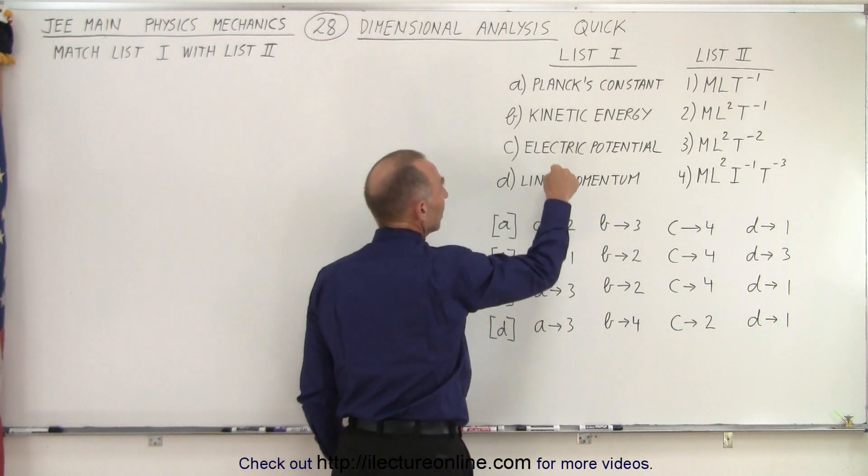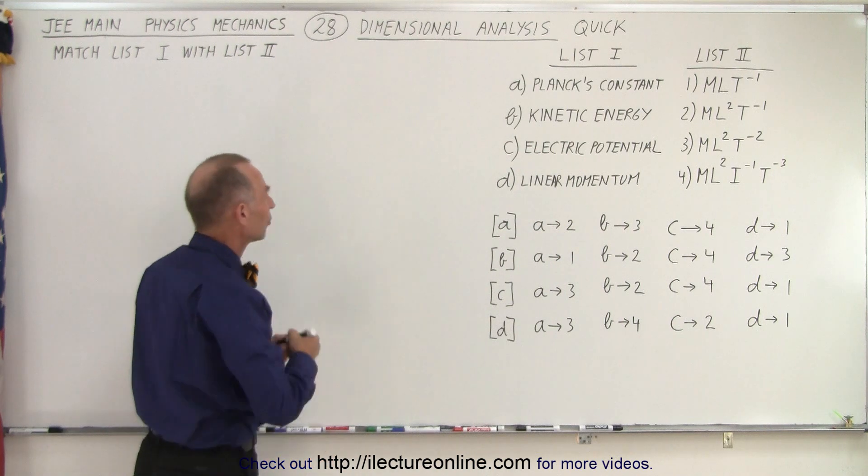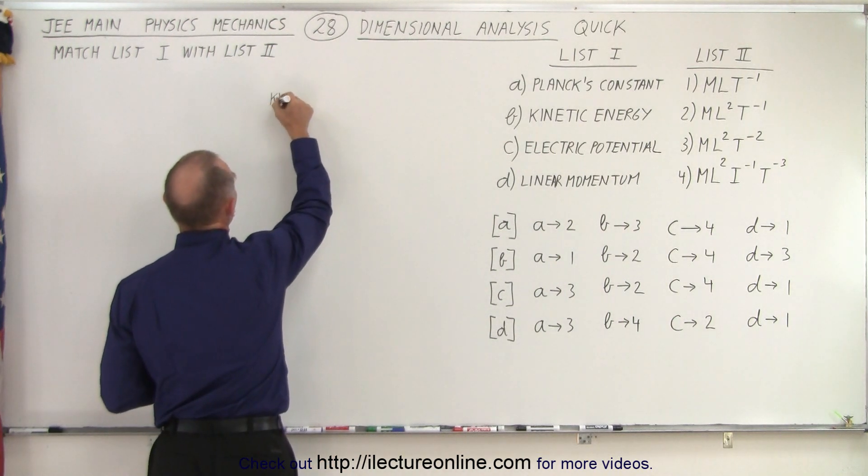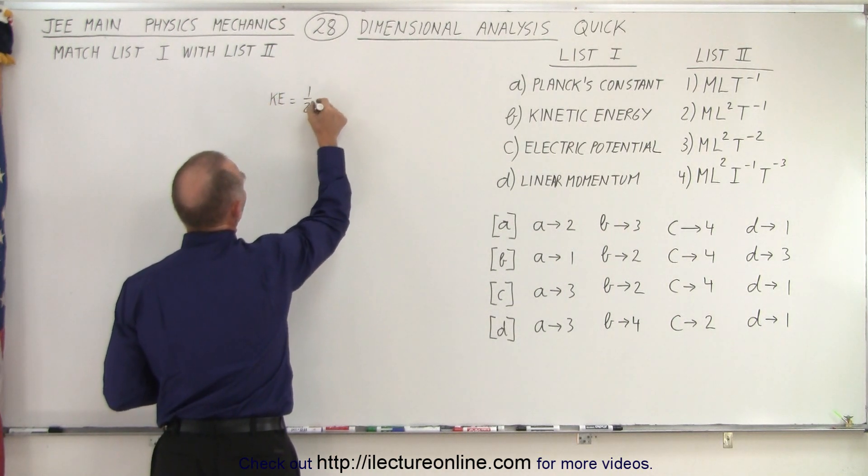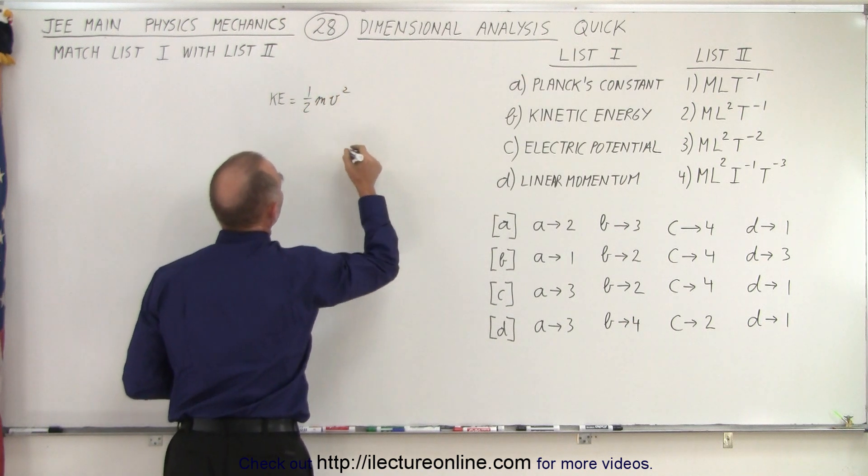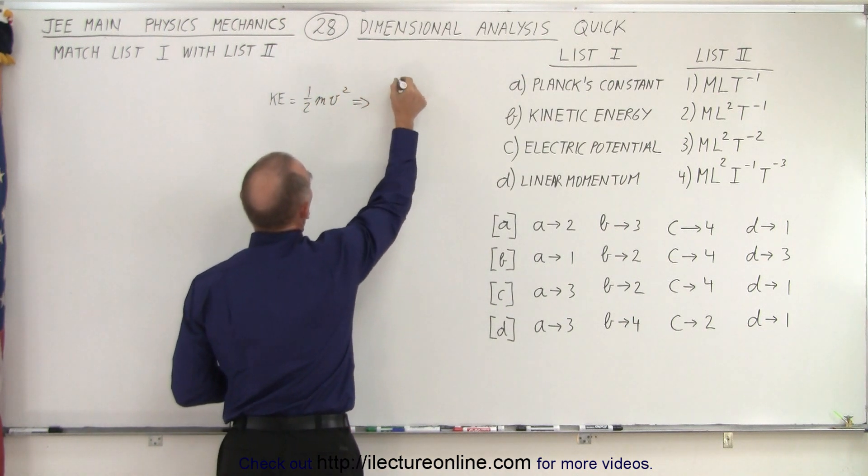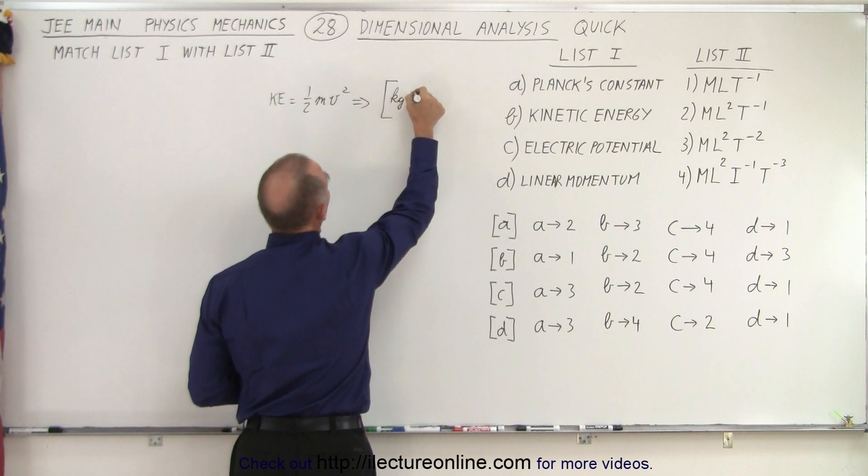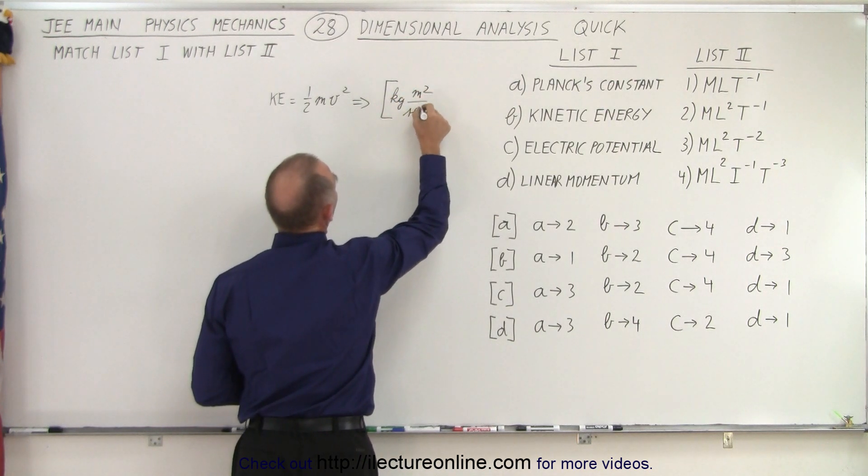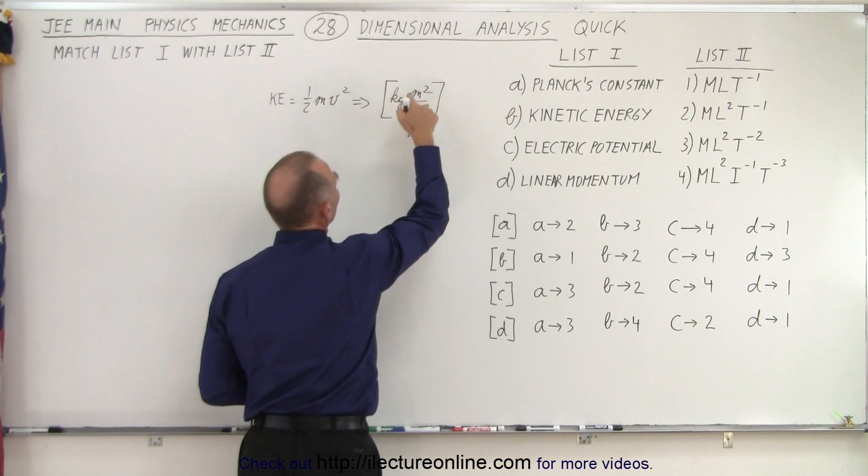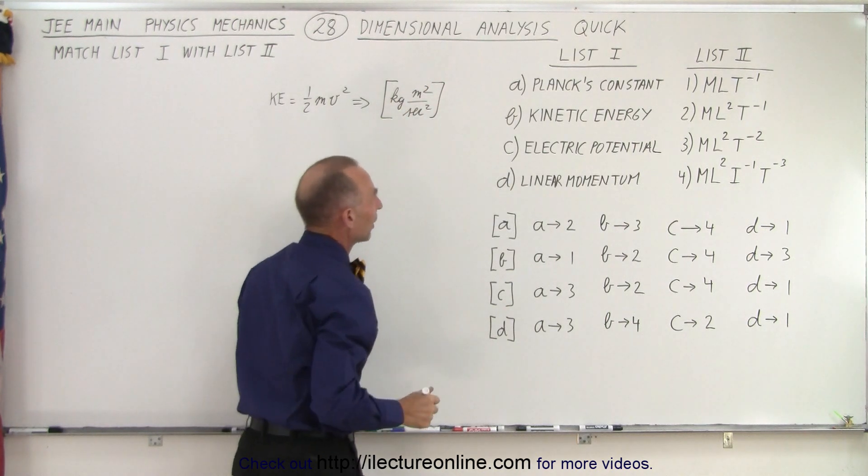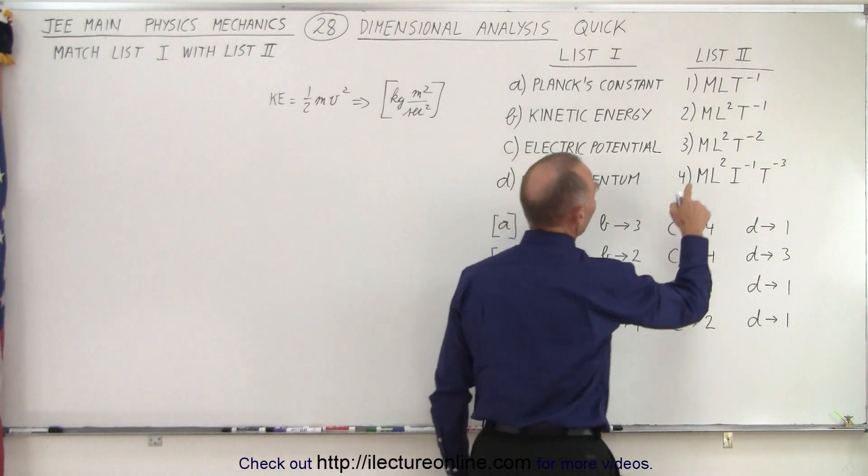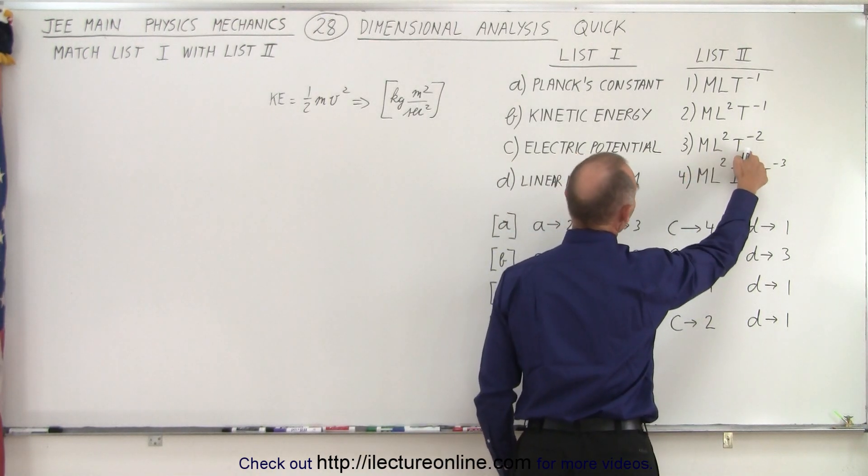kinetic energy and linear momentum are kind of easy to work with because we know that kinetic energy is equal to one-half mv squared, which means unit-wise we have kilogram meter squared per second squared, which means we have mass length squared divided by time squared. So here we have mass length squared divided by time squared.